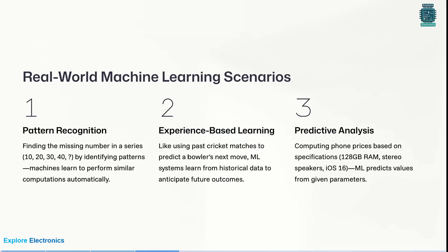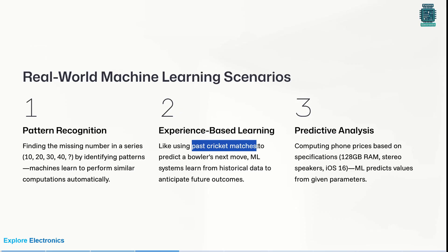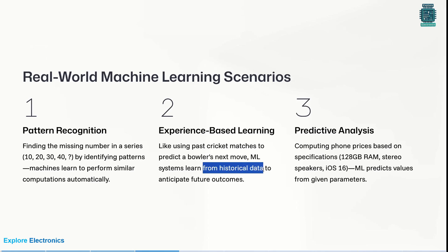Experience-based learning: using past cricket matches to predict a bowler's next move. By looking at previous matches and bowling strategies, the machine will understand and tell you what the bowler can bowl in the next delivery. Machine learning systems learn from historical data to anticipate future outcomes — this is the best example to explain experience-based learning.